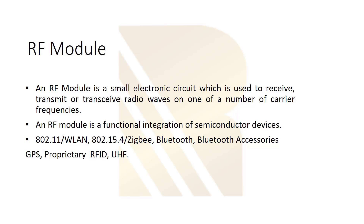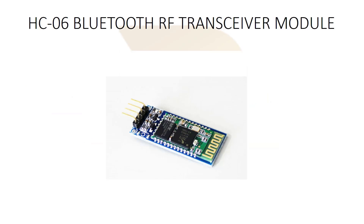Other examples include Bluetooth accessories, GPS, and RFID. As you can see here, this is an HC-06 Bluetooth RF transceiver module. The core component is visible here, along with capacitors or resistors, and this is the antenna.